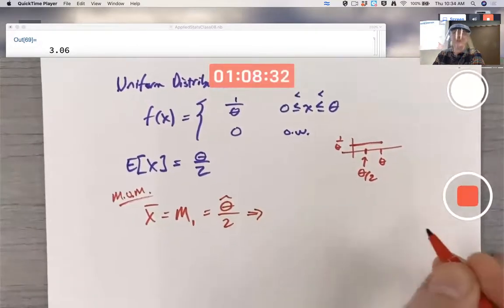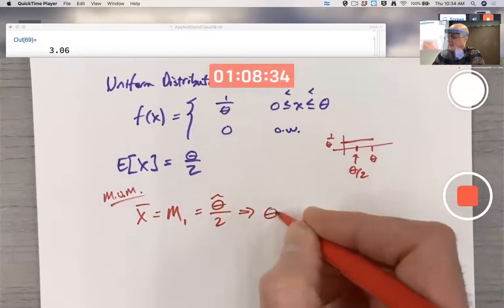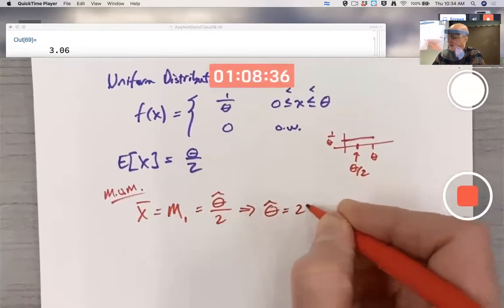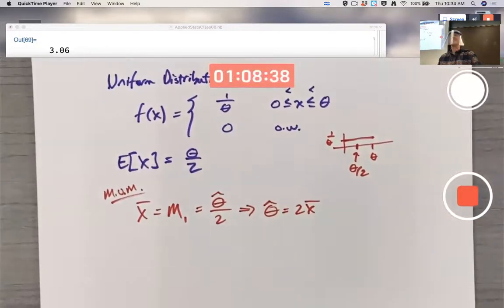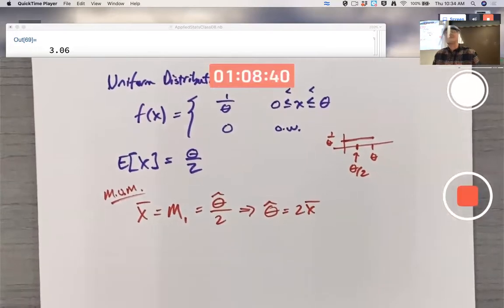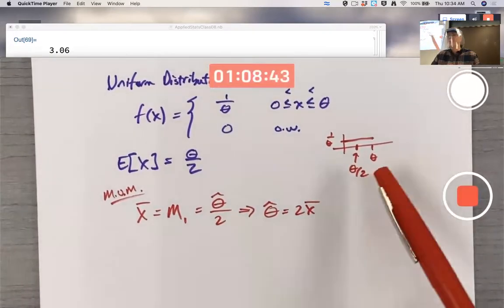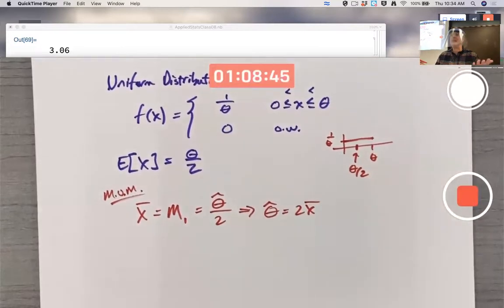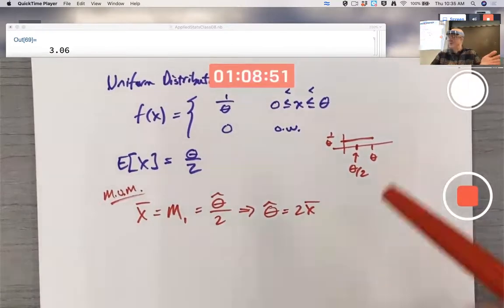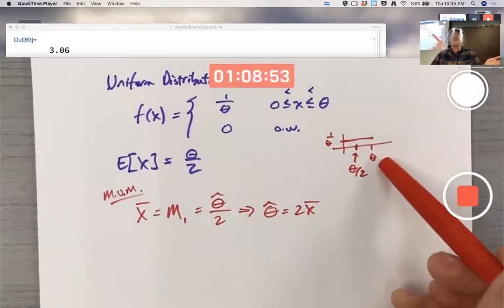And then just solve for that estimate, multiply by two. In this case, theta hat is going to be two X bar. This makes good logical sense. If you think a uniform distribution is a good model and you've got some data, X bar should be near the middle of the data. If you multiply it by two, it should give you the right endpoint of where the PDF is positive.